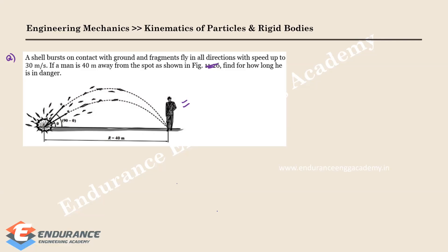A shell bursts on contact with the ground and fragments fly in all directions at speeds up to 30 meters per second. Here, suppose this is my shell — the shell is being burst and the fragments are being sent in all directions. Basically, this is a question that belongs to projectile motion.